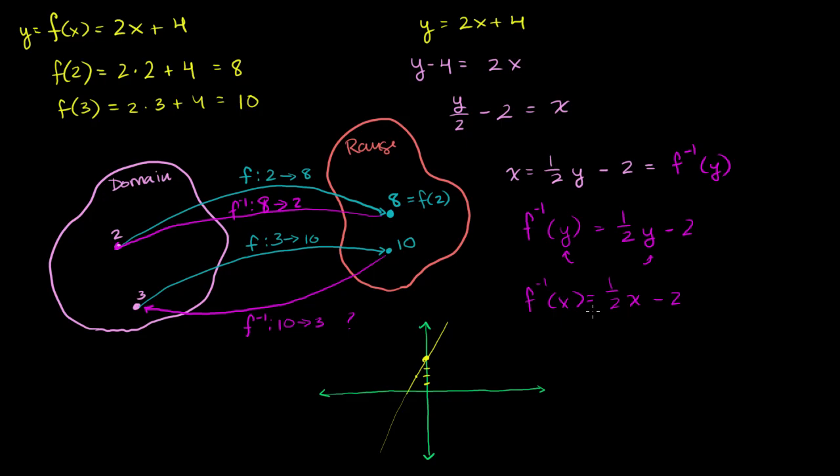What does the inverse function look like as a function of x? Remember, we solved for x and then we swapped the x and the y, essentially. We could say now that y is equal to f inverse of x. So we have a y-intercept of negative 2. And now the slope is 1 half. The slope looks like this. Let me see if I can draw it. The line looks something like that.